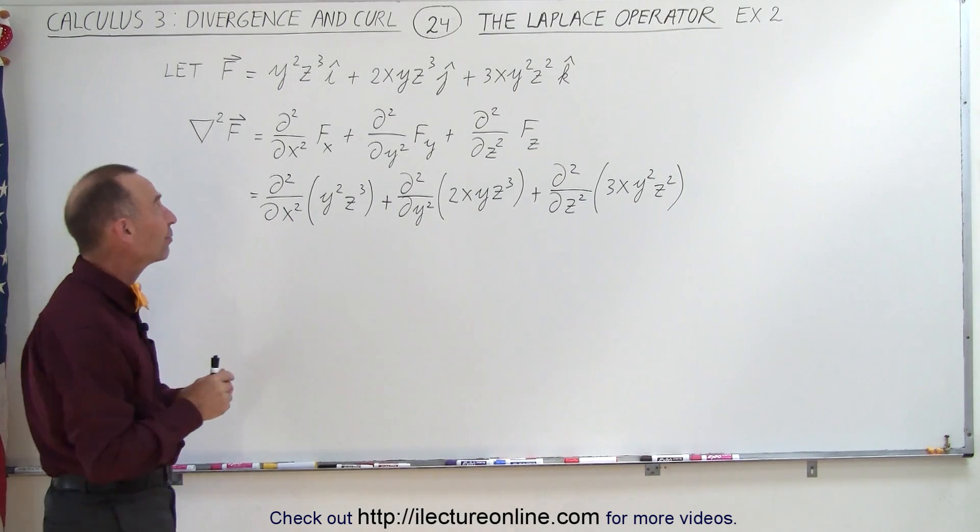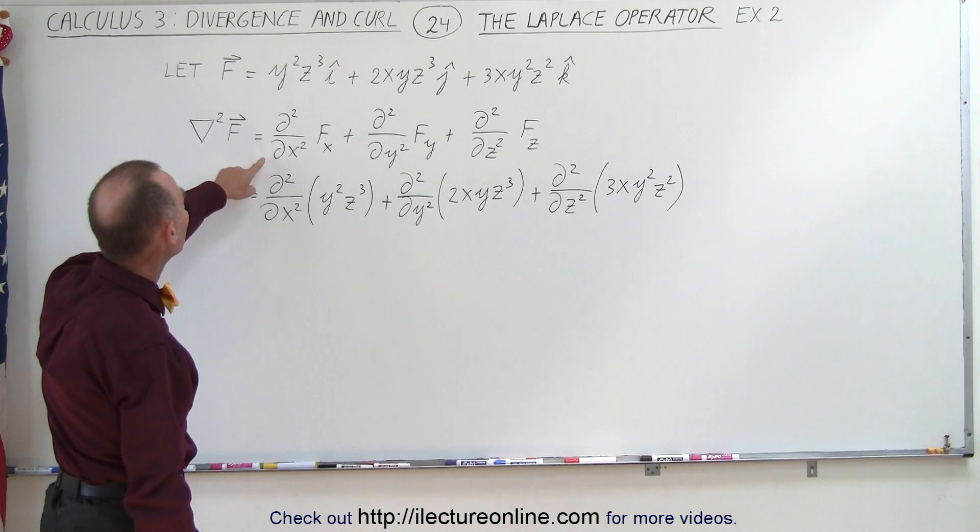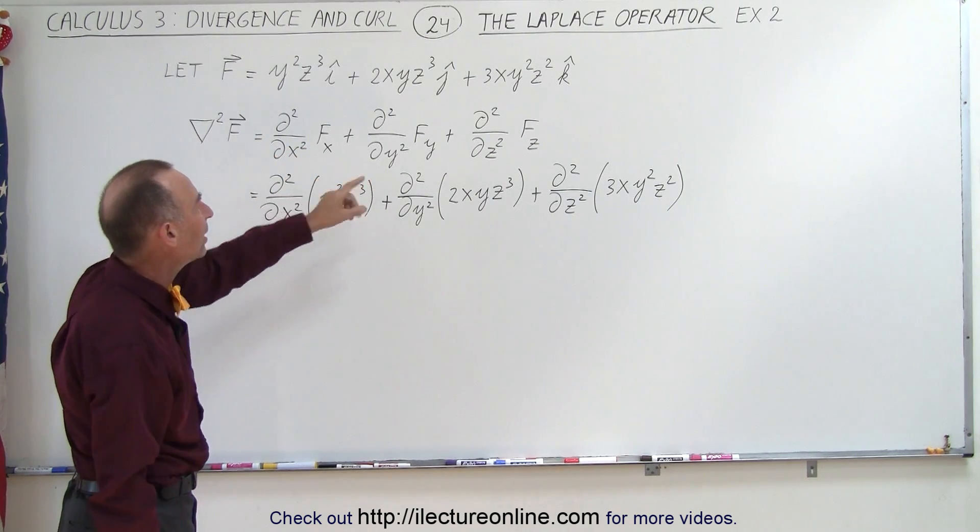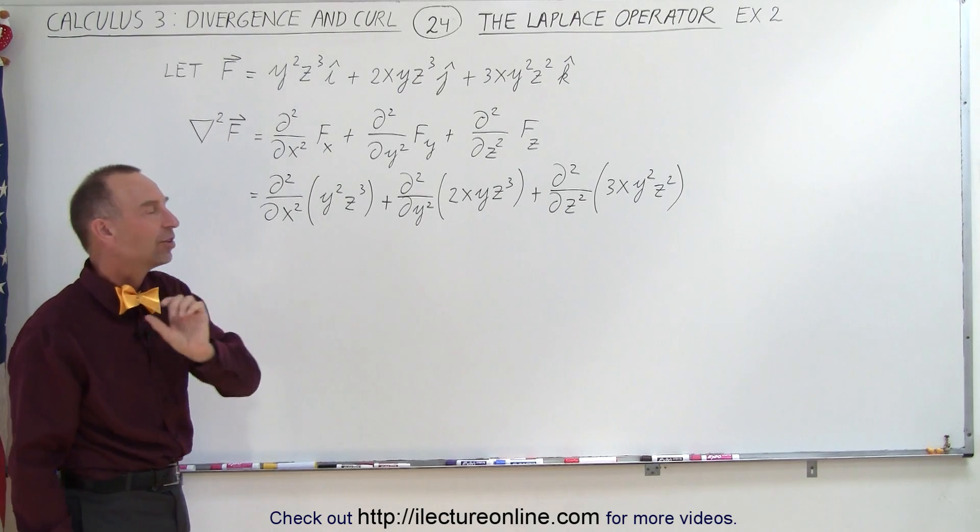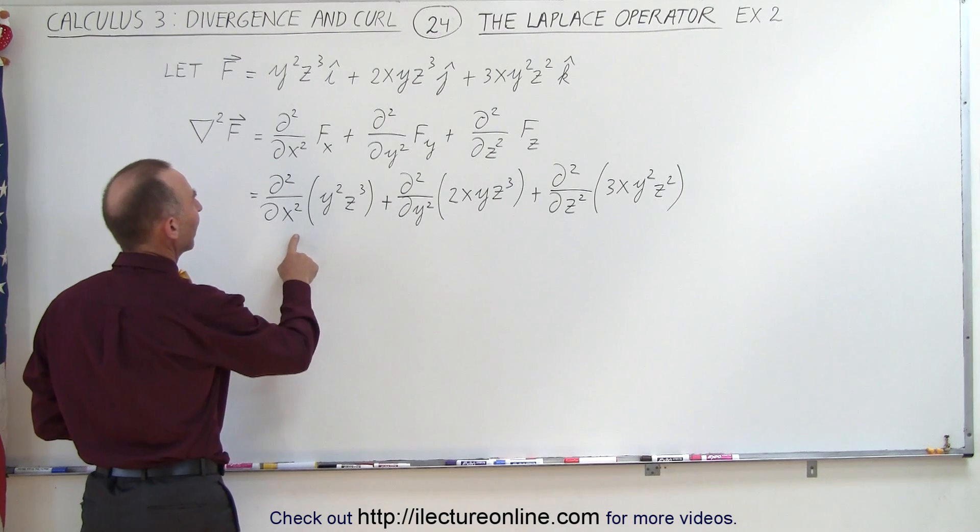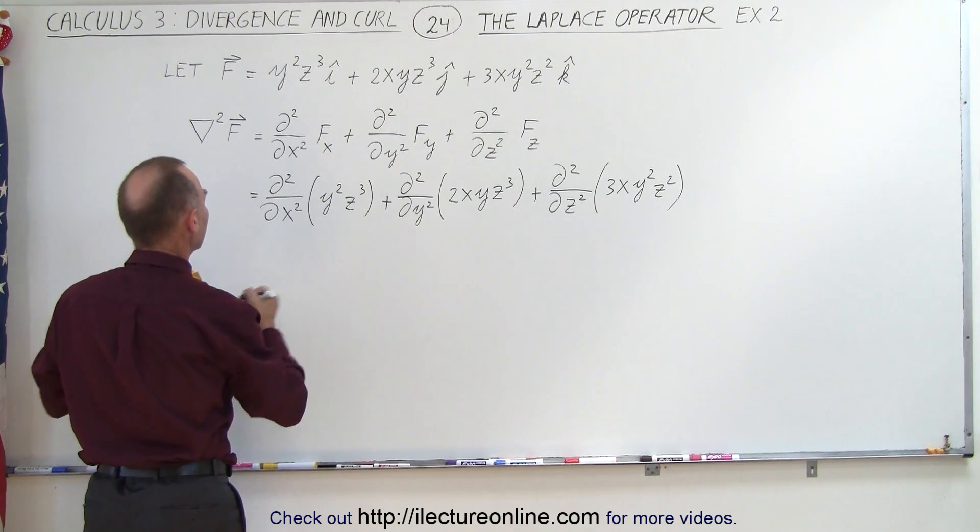Notice it's a little bit easier than if we operate on a scalar quantity because we only have to take the second partial derivative with respect to x, y, and z on only the x, the y, and the z components separately. So here we have already put in the basic work. Now let's go ahead and find the first and second derivative of this.